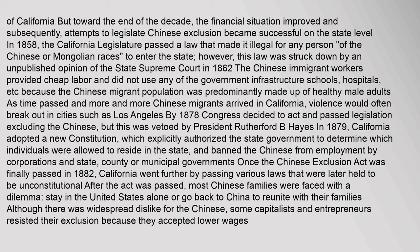By 1878, Congress decided to act and passed legislation excluding the Chinese, but this was vetoed by President Rutherford B. Hayes. In 1879, California adopted a new constitution which explicitly authorized the state government to determine which individuals were allowed to reside in the state, and banned the Chinese from employment by corporations and state, county, or municipal governments. Once the Chinese Exclusion Act was finally passed in 1882, California went further by passing various laws that were later held to be unconstitutional. After the act was passed, most Chinese families faced a dilemma: stay in the United States alone or return to China to reunite with their families.